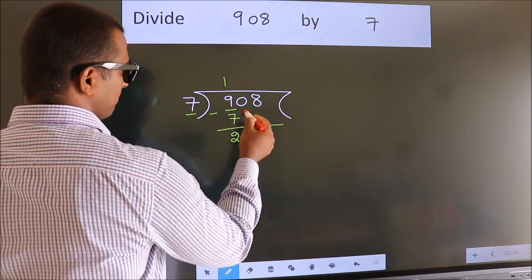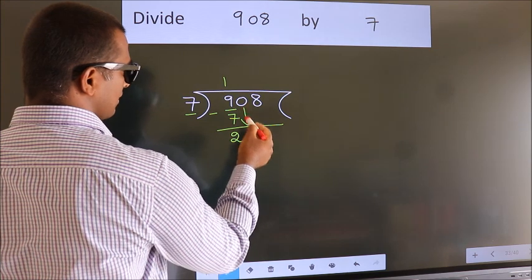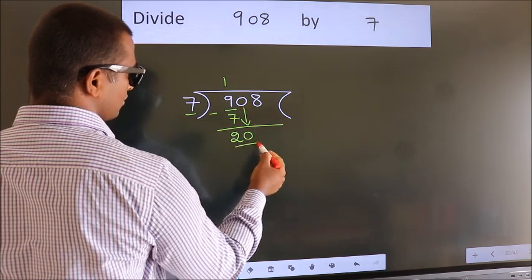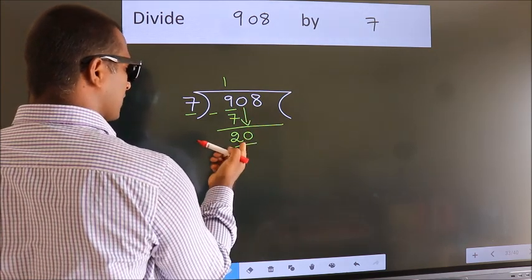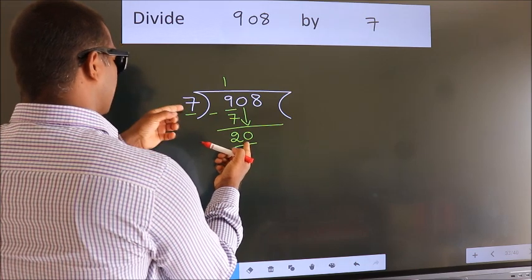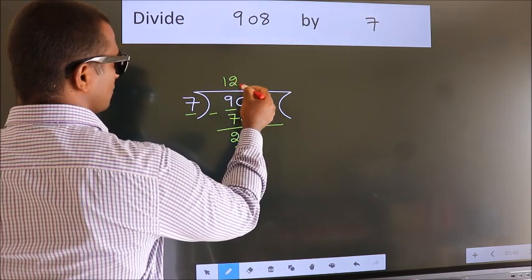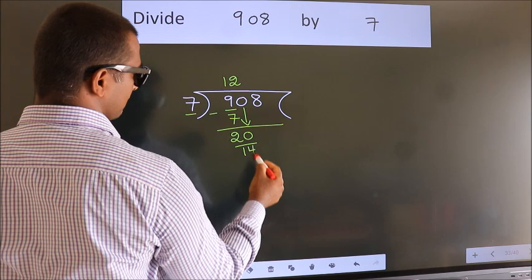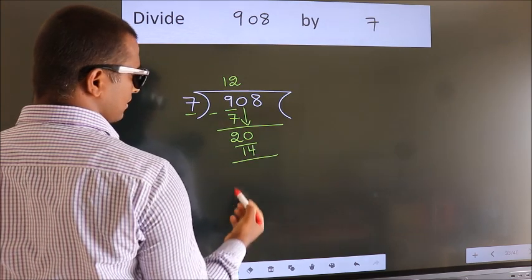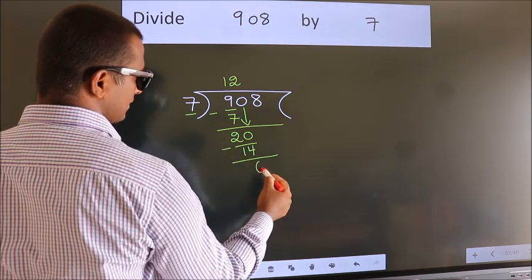After this, bring down the beside number. So, 0 down. So, 20. A number close to 20 in 7 table is 7, 2s, 14. Now, we subtract. We get 6.